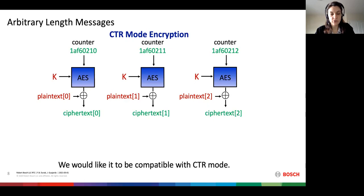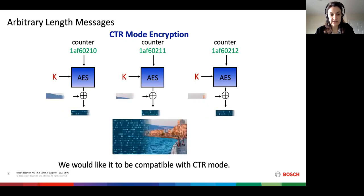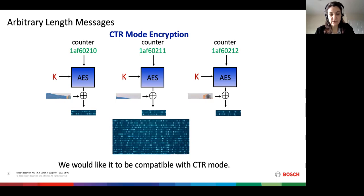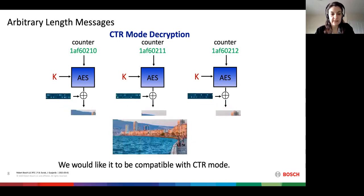The most widely used mode of operation is counter mode, because it enables parallelism. The basic idea of counter mode is that it takes the secret key of AES and generates a key stream using a public counter, which is incremented for each block encryption. The plaintext is encrypted by XORing it with the output of this encryption of the counters to generate the ciphertext. This makes counter mode inverse-free, because to decrypt, only swapping plaintext and ciphertext is enough, without inverting the AES computation. Our computations need to be compatible with counter mode, which is why this is important.